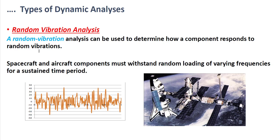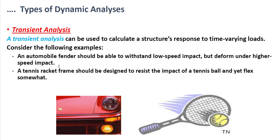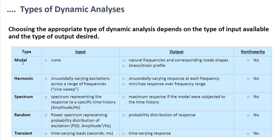Transient analysis is used to calculate a structure's response to time-varying loads. For example, automobile fenders should be able to withstand low-speed impact but deform under higher-speed impact. Another example is a tennis racket frame that is designed to resist the impact of a tennis ball and yet flex somewhat. Out of these dynamic analyses, only transient analysis is nonlinear.